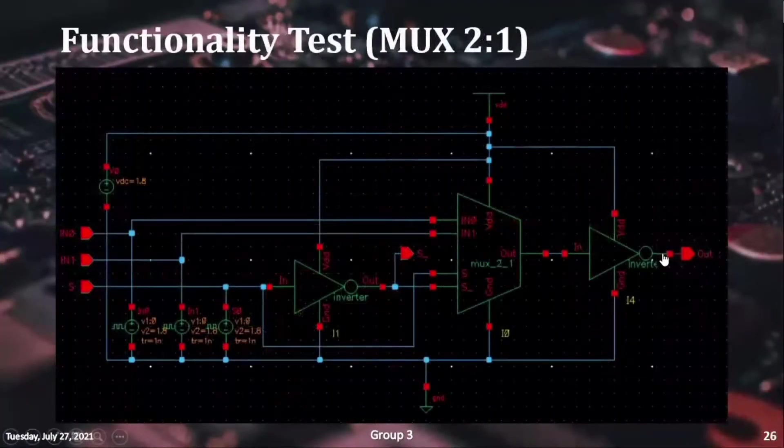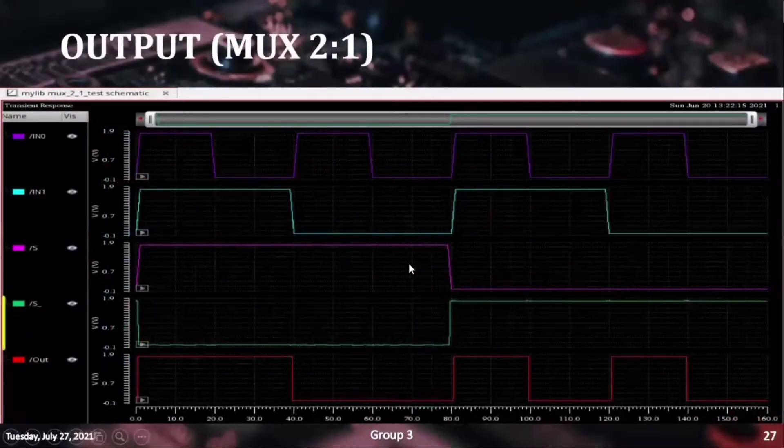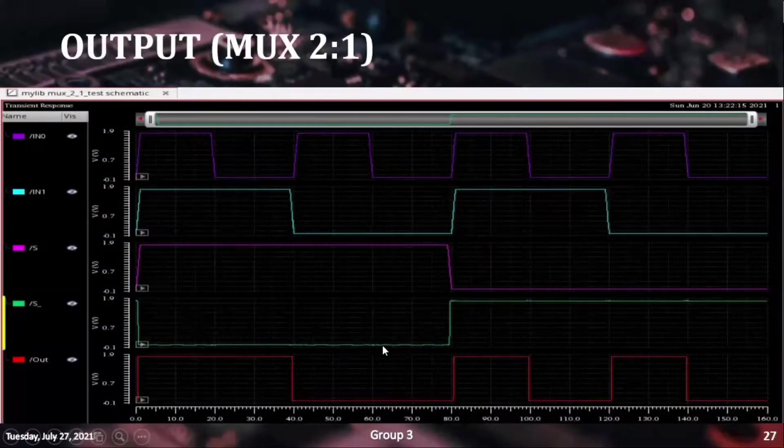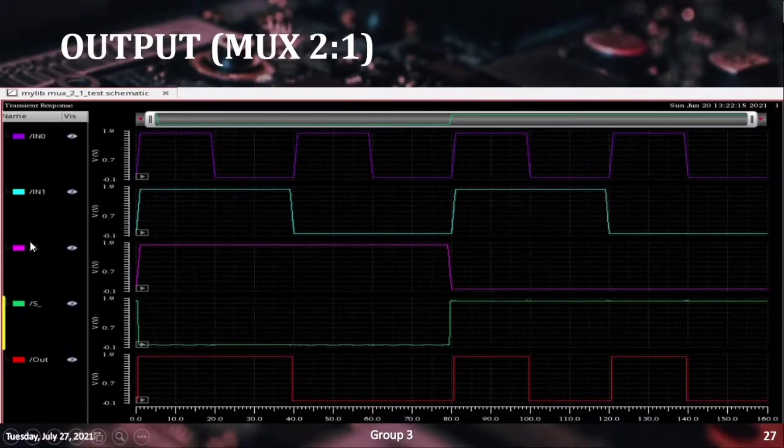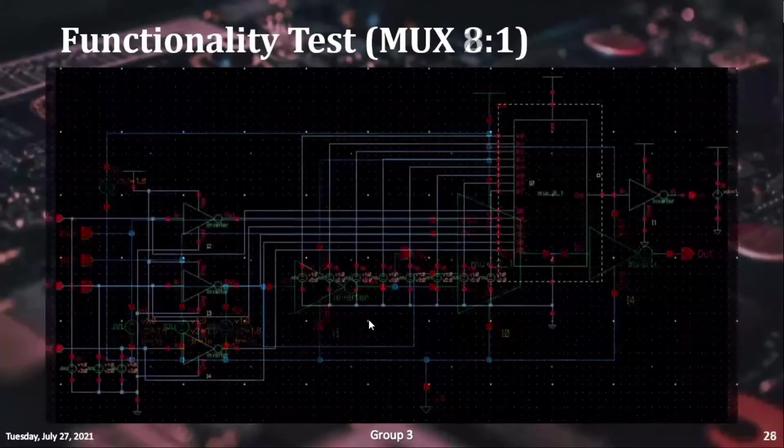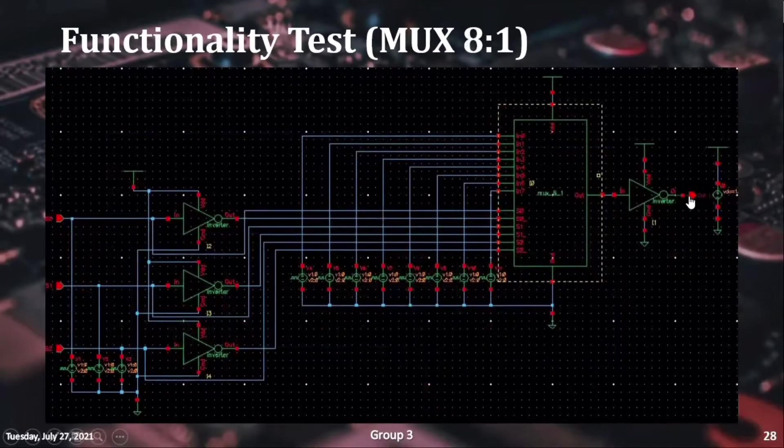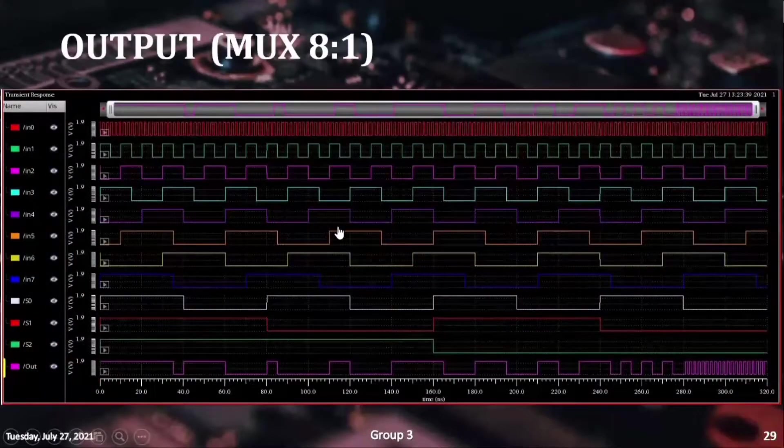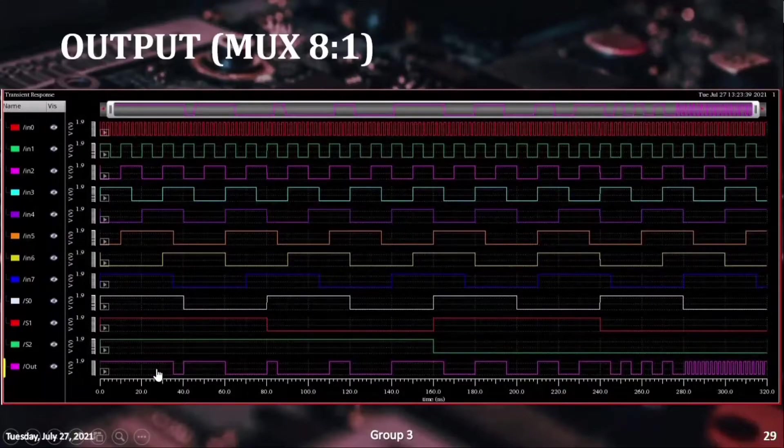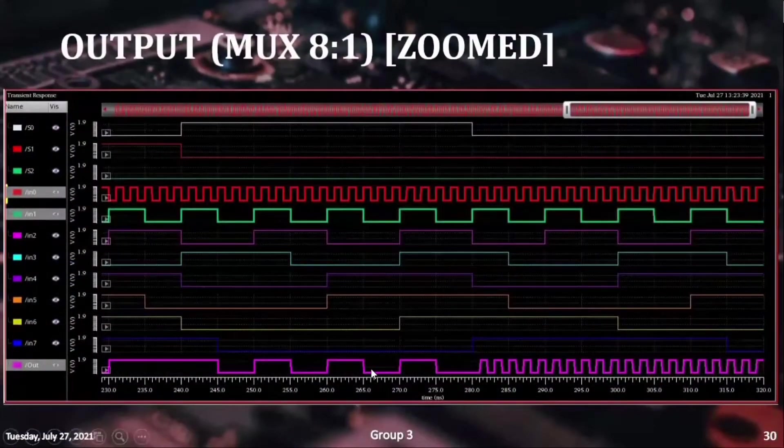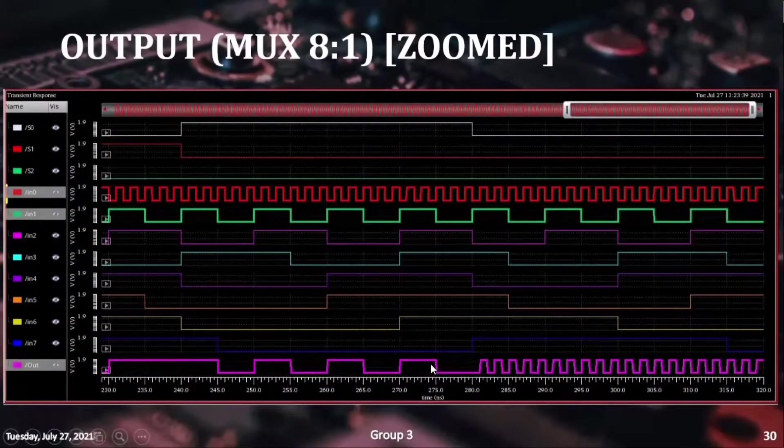In the multiplexer test circuit, we can see how two input channels are passed onto the output depending on the select pins. And in the case of the 8-to-1 multiplexer test circuit, we can see how inputs having different frequencies are passed onto the output channel without interfering with each other.